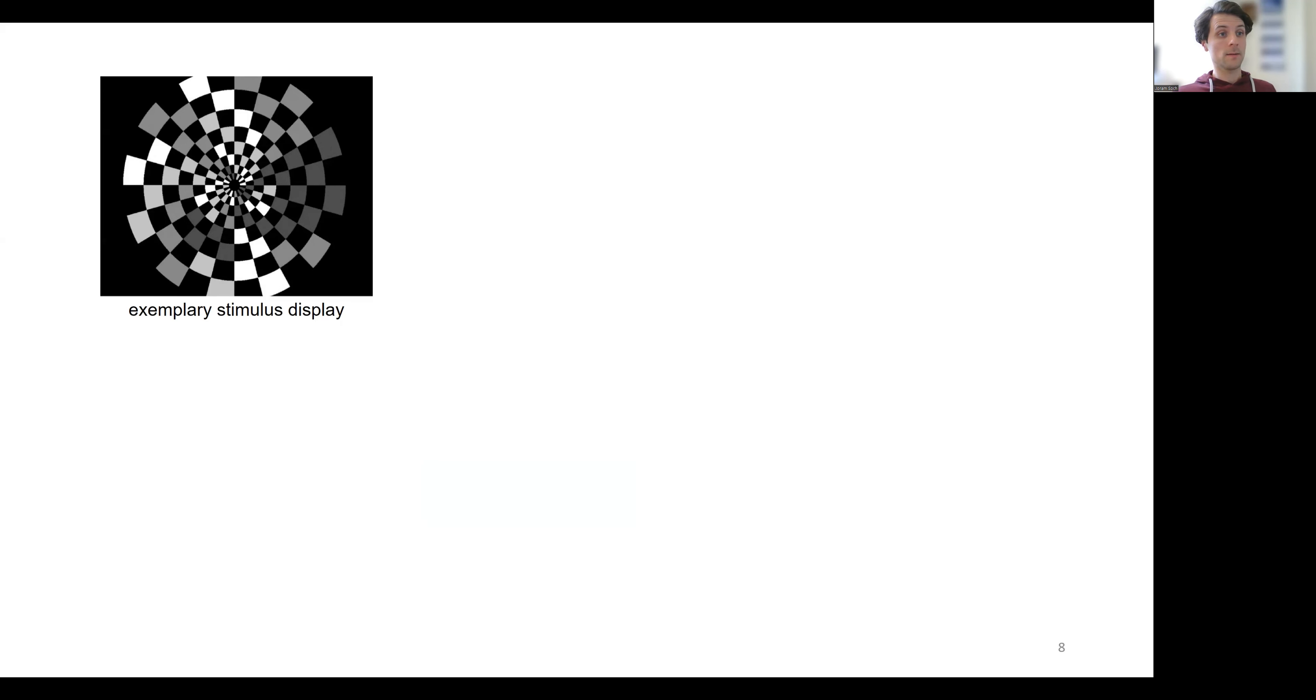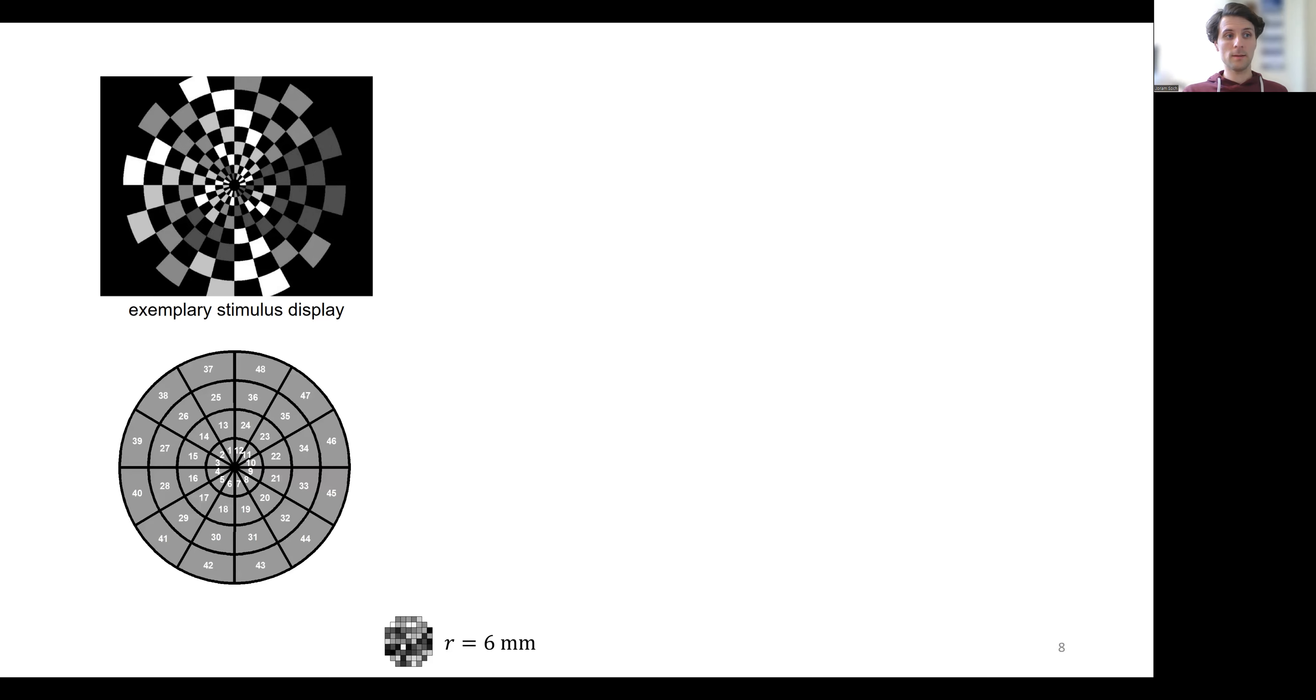For our decoding analysis, we used a searchlight radius of 6 mm and decoded contrast levels in each of the 48 sectors, yielding 48 decoding accuracy maps for each subject.